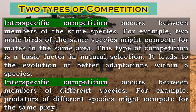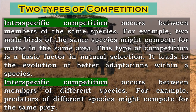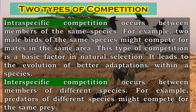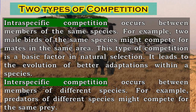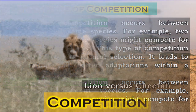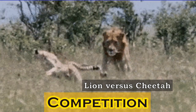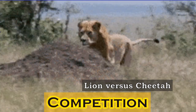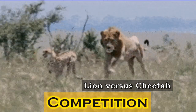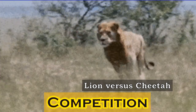Intraspecific competition leads to the evolution of better adaptations within a species. Interspecific competition occurs between members of different species. For example, predators of different species might compete for the same prey. An example among animals could be the cheetah and lion. Since both species feed on similar prey, they are negatively impacted by the presence of the other because they will have less food. However, they persist together despite the prediction that under competition, one will displace the other.